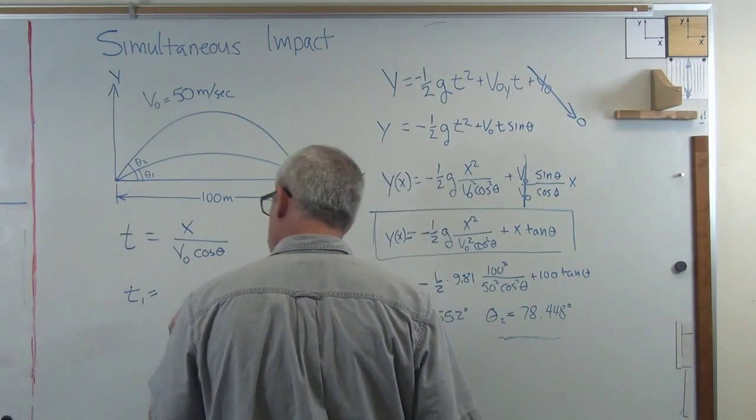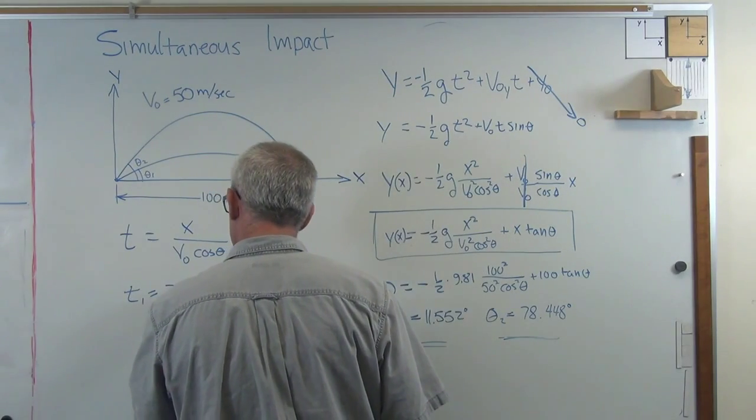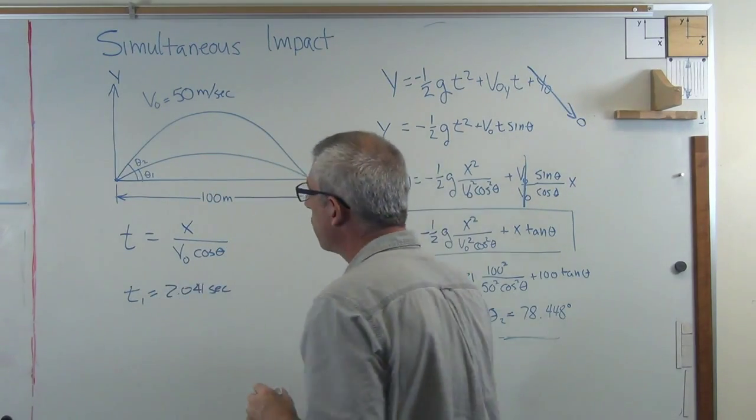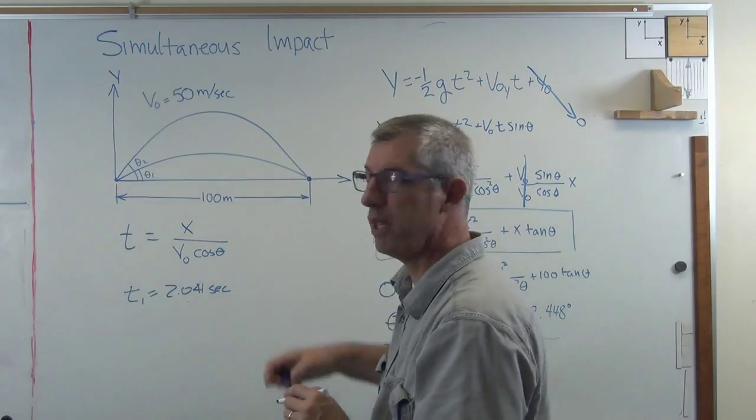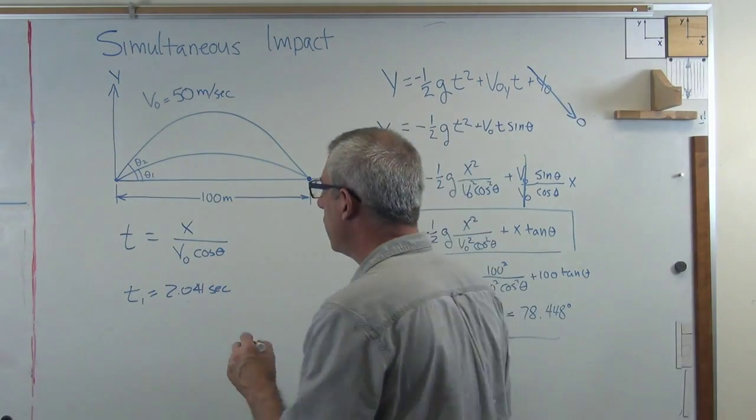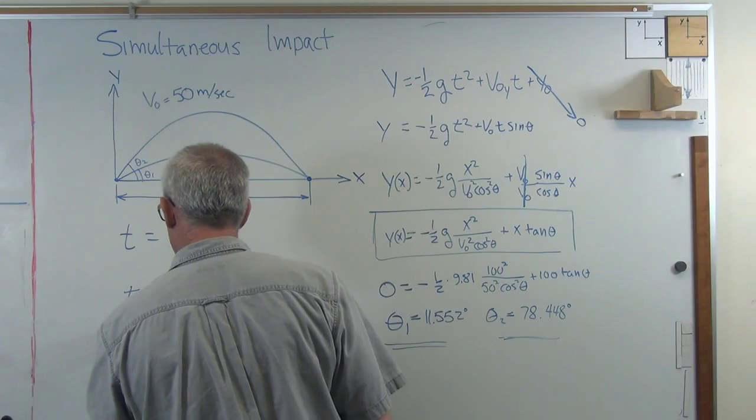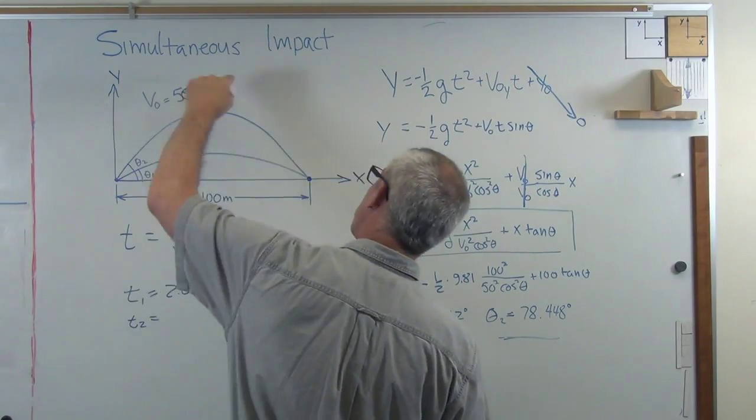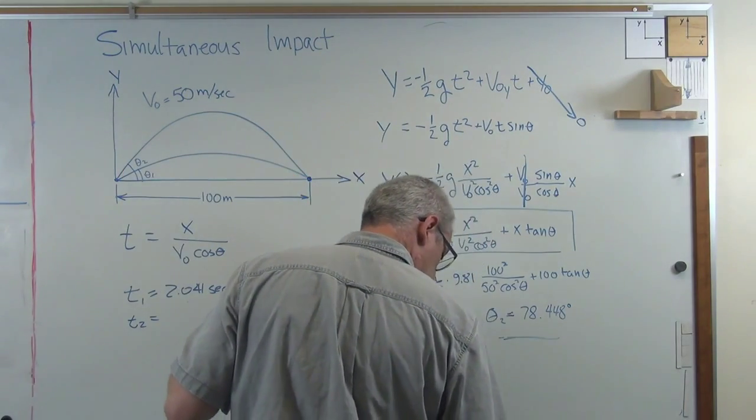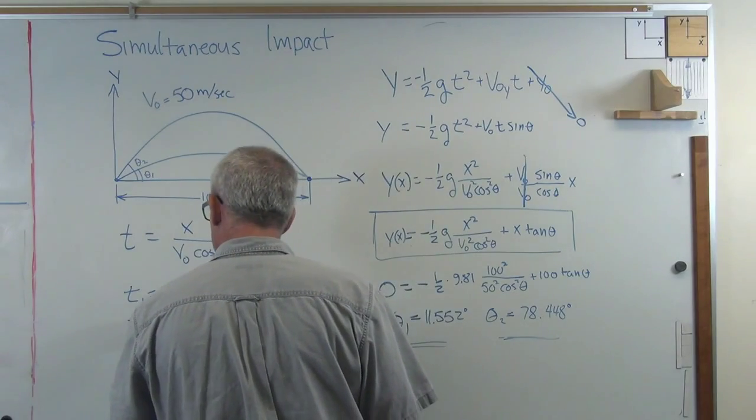t₁ turns out to be 2.041 seconds. Okay, so for the low shot right here, it takes a little over two seconds to go from the launch point to the target. t₂, the high solution, where it's going to be in the air a lot longer, I get 9.987 seconds.